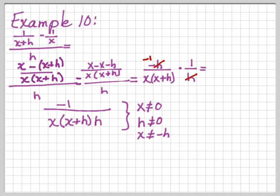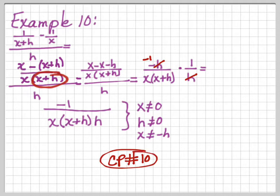Where are our restrictions? x cannot be 0, x cannot be −h, and h cannot be 0. That's a little tougher — you have to look at that one closely. Go ahead and do checkpoint number 10, and we're done. See you guys in class.